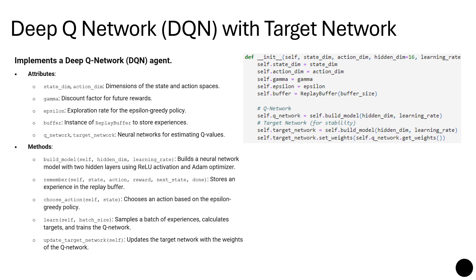If we dig a little into the initialization, we have the state dimension and action dimension to create the network. We have gamma, epsilon, and buffer. So the Q network will be built with the hidden dimension. We could choose 16 in this case. We have the learning rate, it could be 0.001, 0.01, 0.02, depends on your solution. You have to try different values. Then you have the target network that is built the same. We have to have both of them the same initially.